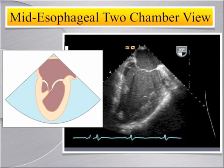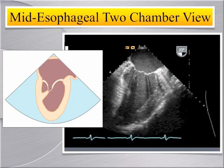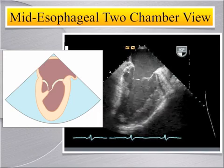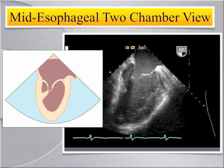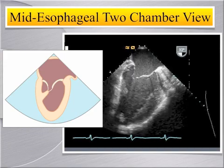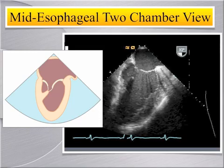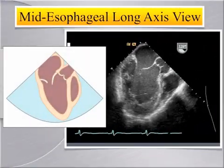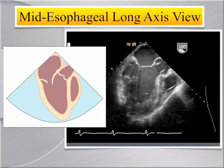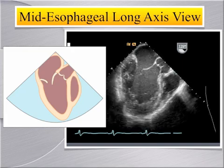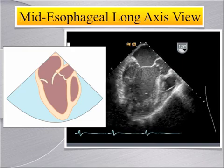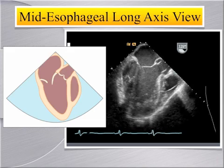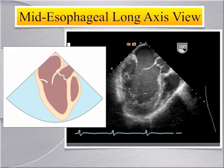At 90 degrees, the mid-esophageal two-chamber view shows the anterior wall on the right and the inferior wall on the left of the LV at the basal, mid, and apical levels. Note that apical foreshortening is a common issue in TEE, and thus the probe should be gently retroflexed to assure adequate apical visualization. At 100 to 120 degrees in the mid-esophagus, the mid-esophageal aortic valve long axis view shows the anterior septal wall to the right and the inferolateral wall to the left. It also shows the left ventricular outflow tract for measuring its diameter to calculate stroke volume and cardiac output.